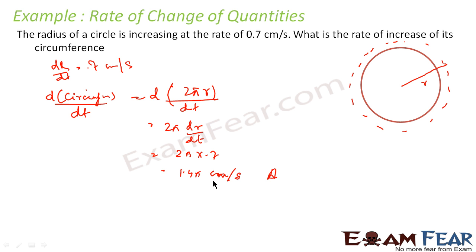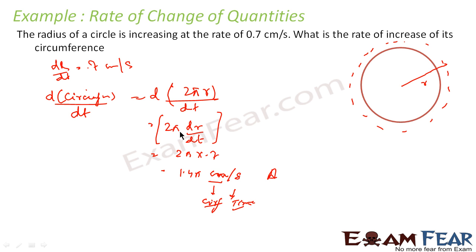Please note, the unit is centimeters per second because this is circumference and this is time. This is a very simple question — we had dr/dt and we had to find circumference change with respect to time. Please note, this is independent of r. For any value of r, the value is the same because there is no r component. If you see change of area or change of volume, the rate of change is also dependent on the current value of r. But here, the rate of change of circumference is independent of r.